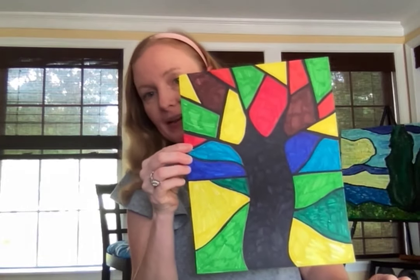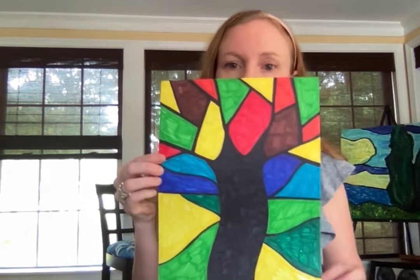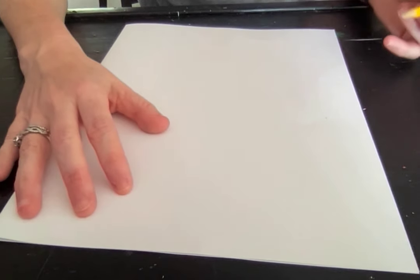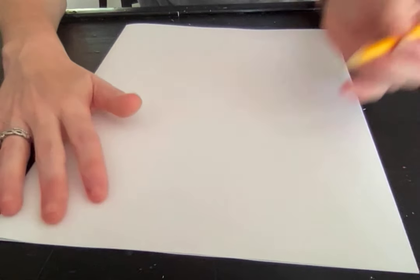So today you're gonna make a stained glass tree. We're working on space and we're working on following simple directions. The way you're gonna do this: stained glass is kind of when you put glass together and it looks like it's broken up into little pieces.